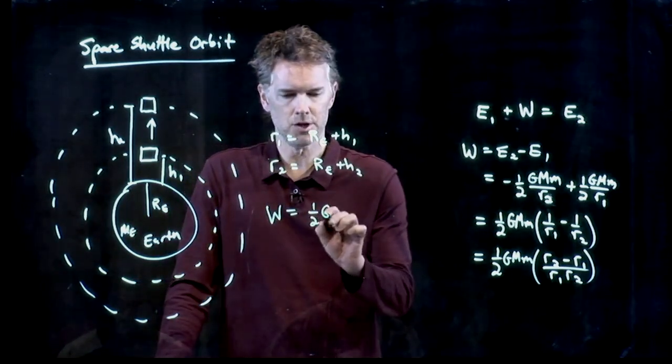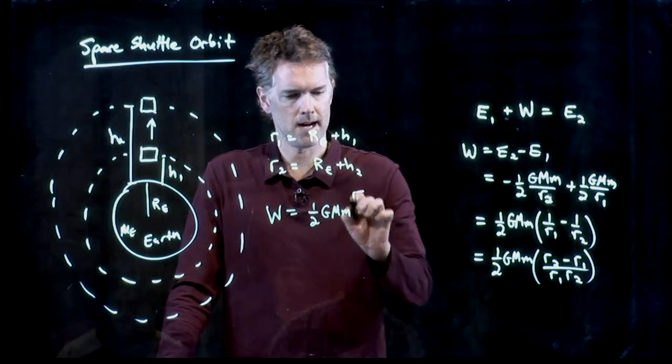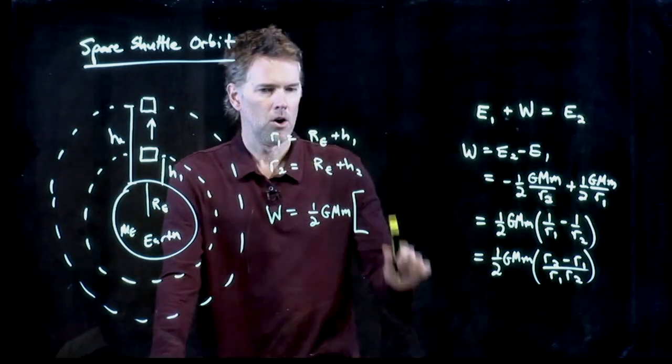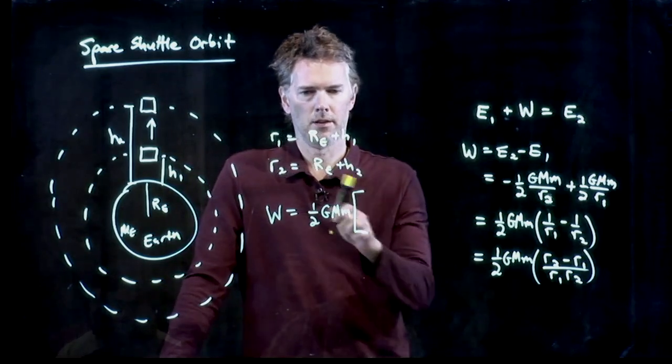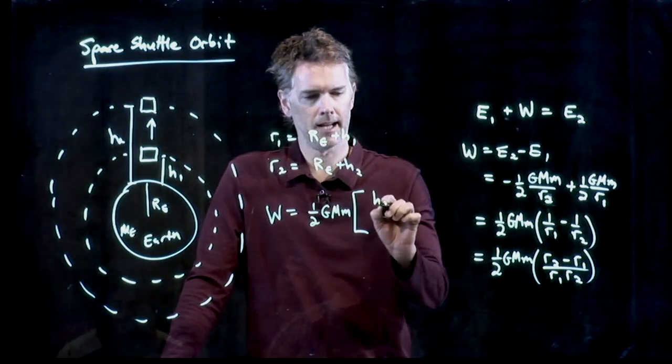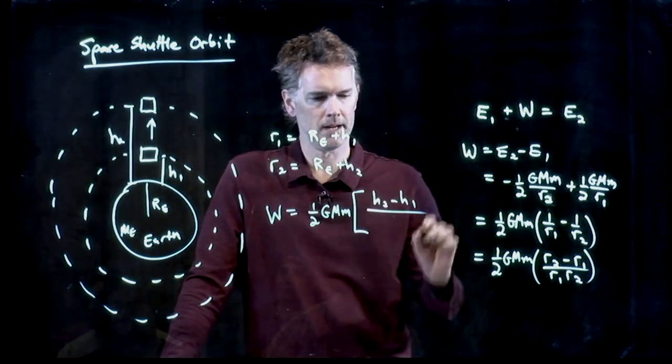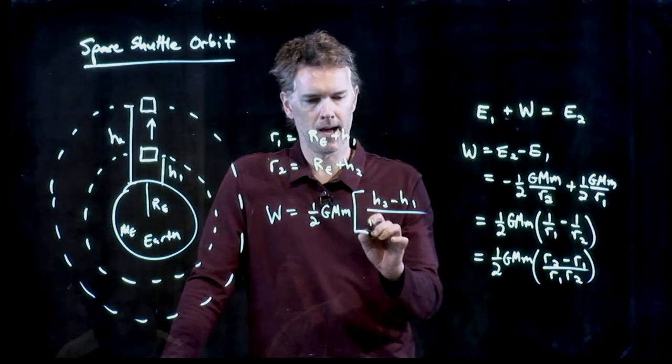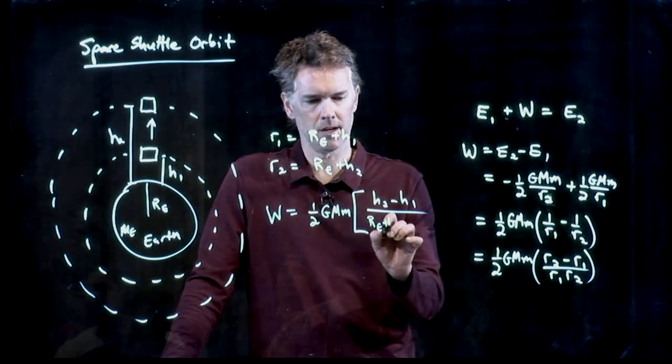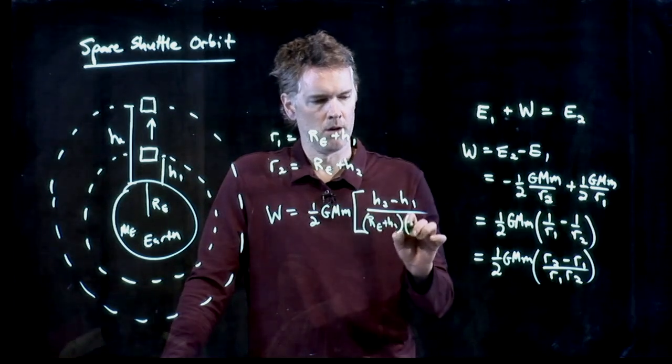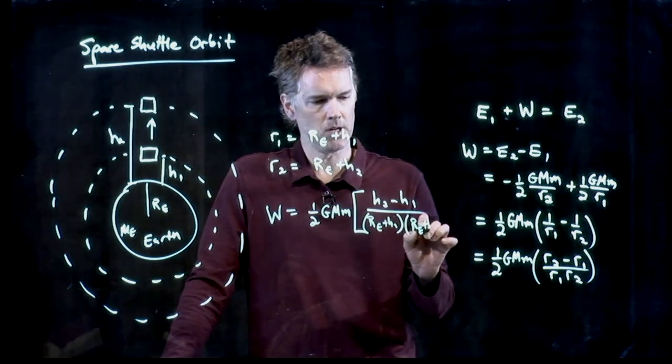It's 1 half GMM times R2 minus R1, the REs are going to cancel out and I get H2 minus H1. And in the bottom we're going to have RE plus H1, RE plus H2.